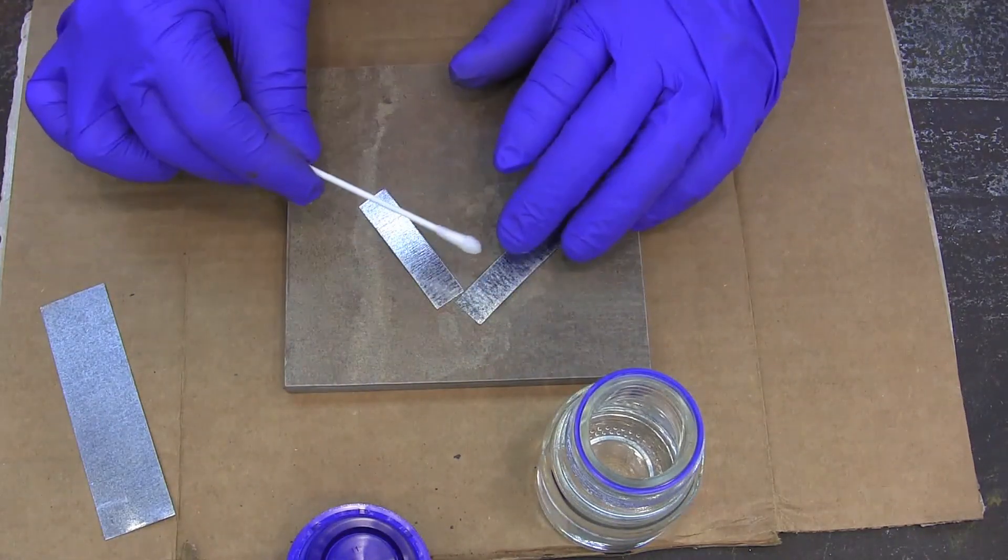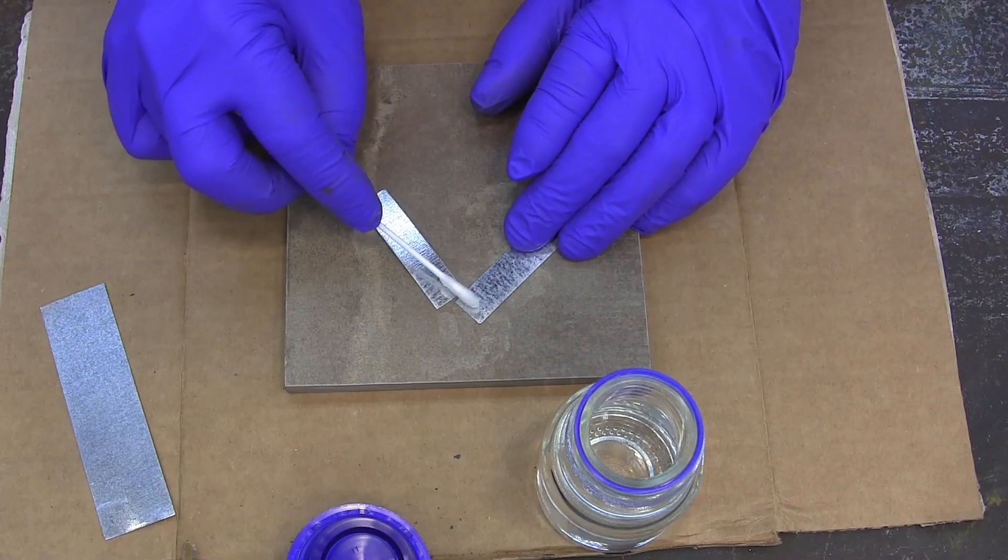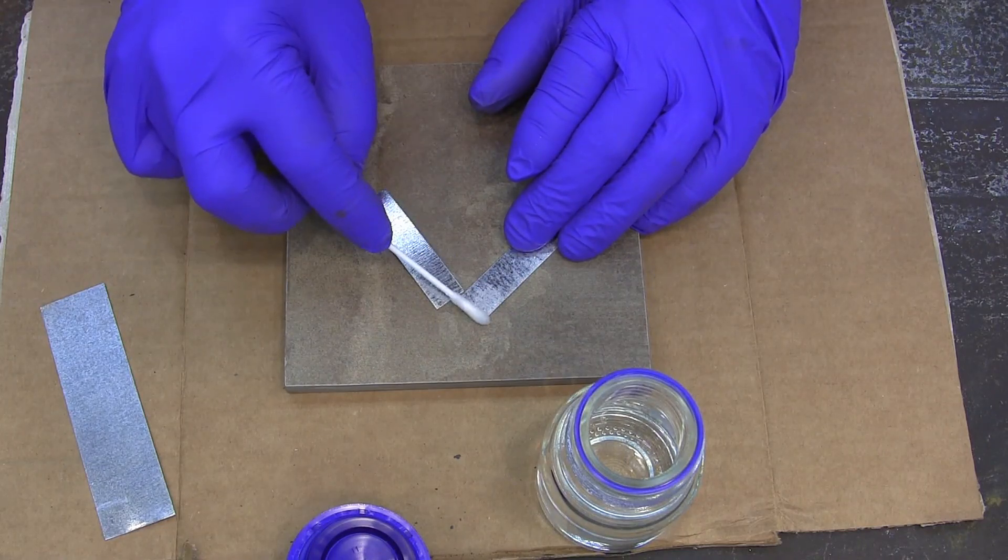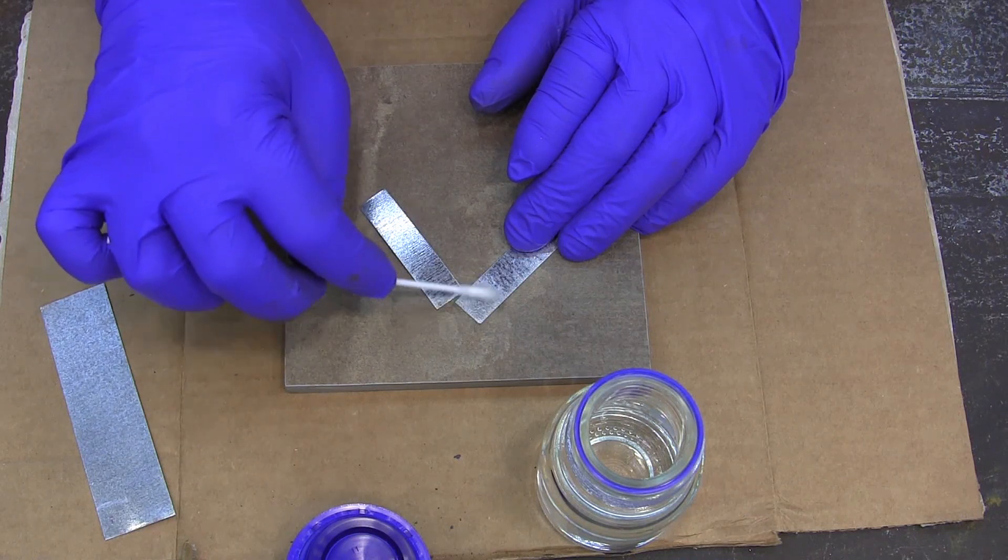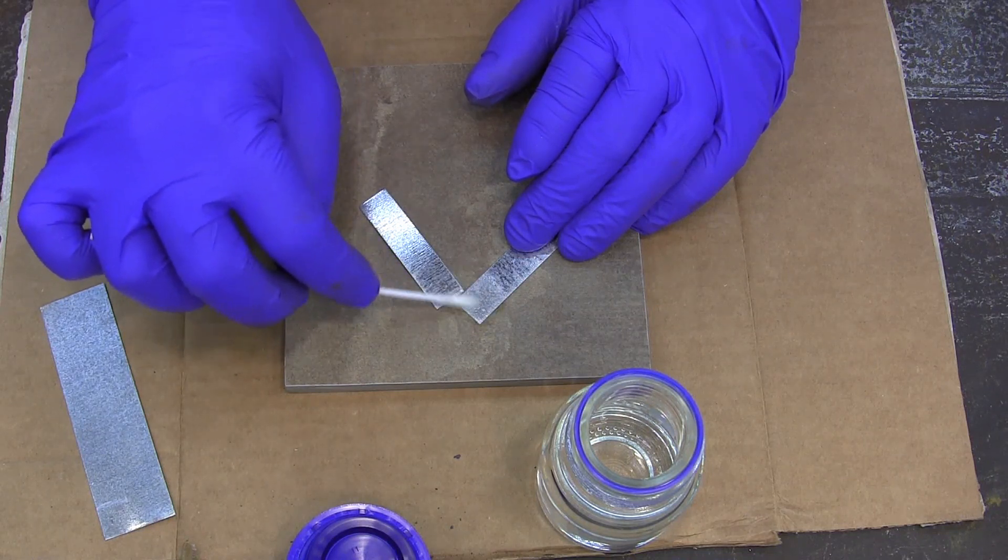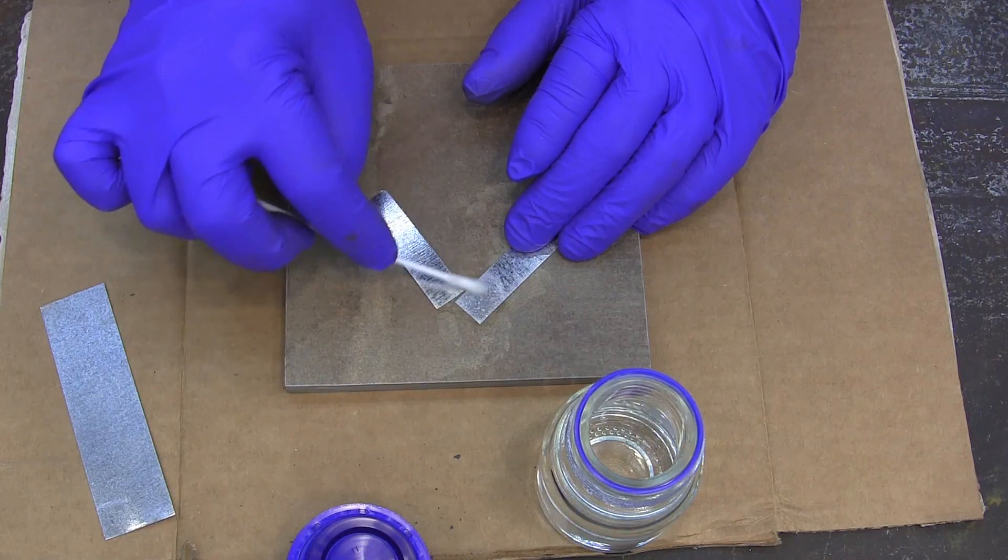Now, notice it's kind of shiny right now. And when we put this on there, it's going to dull. You're going to see it fizz a little bit and it's going to dull. You want to do this in a well ventilated area too. And you can see it's kind of taking the sheen off of that.